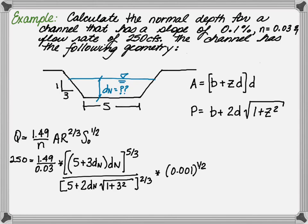With the normal depth embedded in the equation, the best way to solve this is using GoalSeek within Excel. But if you want to solve it by hand, you will need to use the bisection rule. First, let's assume DN is 3. We would calculate a flow rate of 96 CFS, which is not equal to 250.